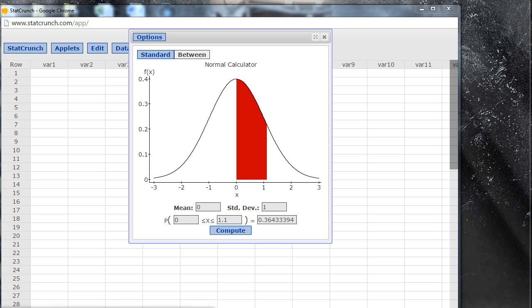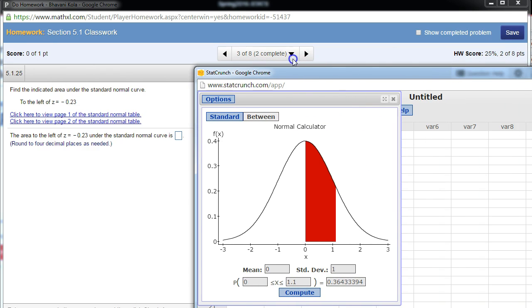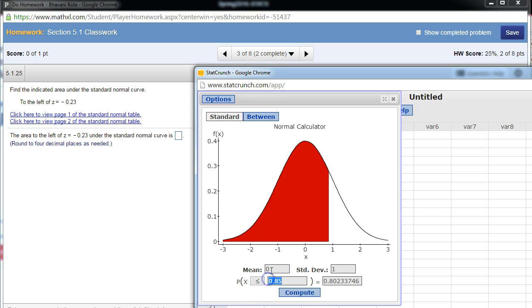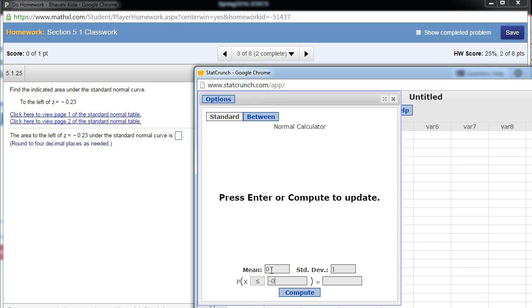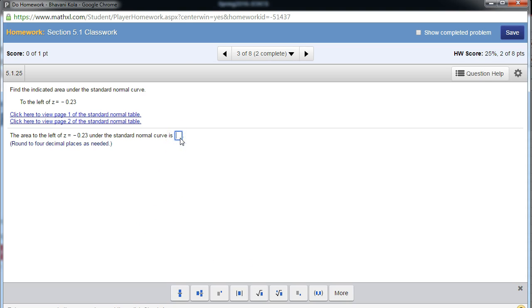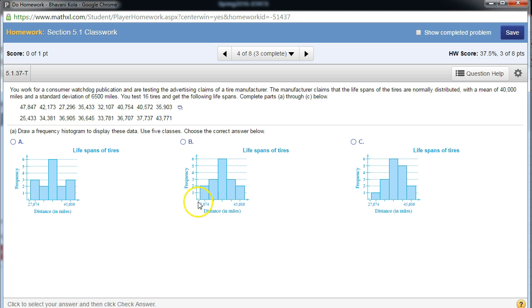Now again, I'm going to go ahead and open my StatCrunch here. What did they ask me? They asked me to find to the left, so I'm going to go back to standard. The greater than is to the right-hand side, the less than is to the left-hand side. So negative 0.23 and Compute, and my area is 0.4090. Four decimal places: 0.4090. Bingo. Hope that helps.